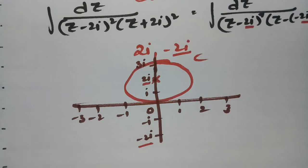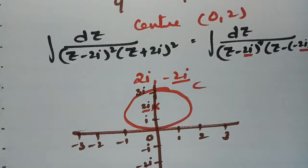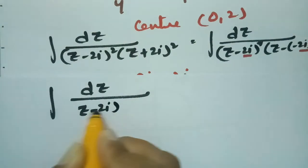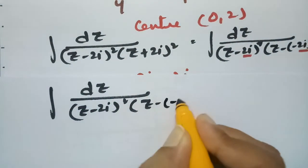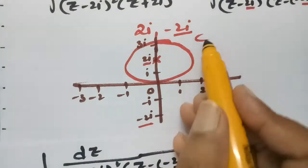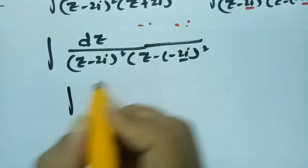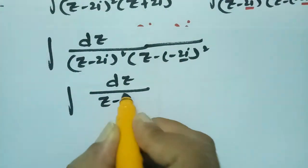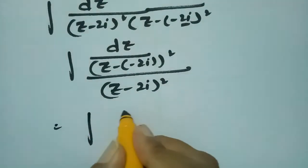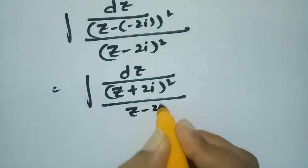So I am transforming this question. The integral can be written as dz by (z minus 2i) whole square into (z minus (minus 2i)) whole square. Since minus 2i is outside the contour c, Cauchy's integral theorem is not applicable at that point, so I am sending (z plus 2i) squared to the numerator. This can be written as (z plus 2i) squared divided by (z minus 2i) whole square.